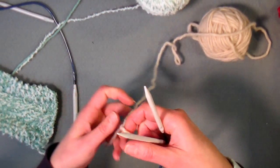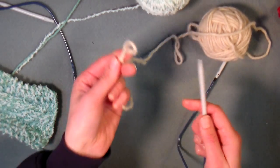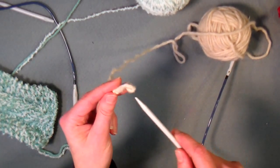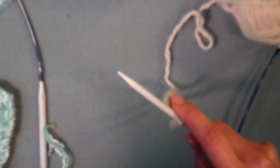I prefer it to the double tailed cast-on because you don't need to estimate how much yarn you need, so again start with a slipknot, put it on your needle and pull it snug. I'm gonna zoom in a little bit for you.